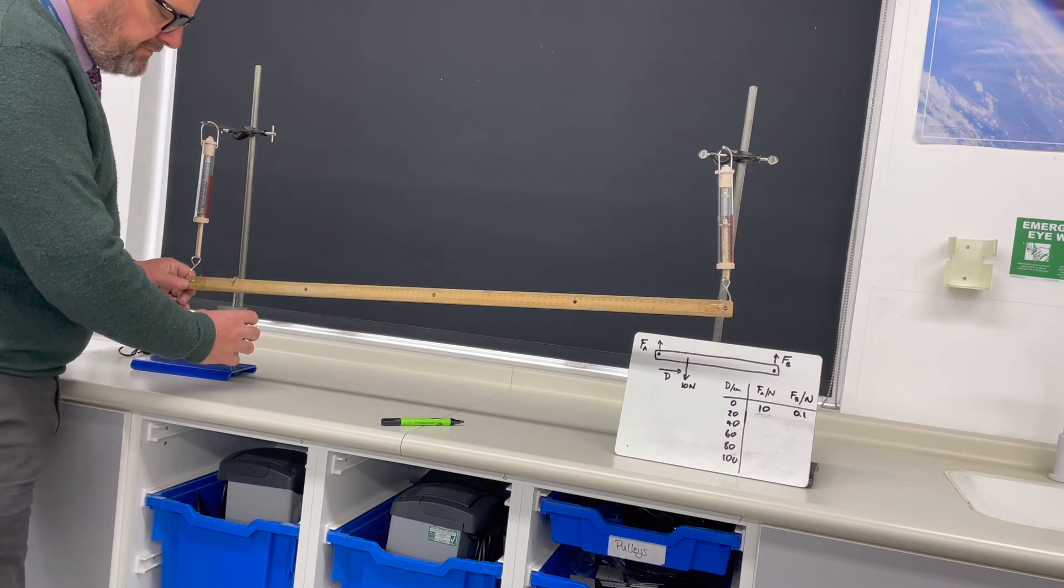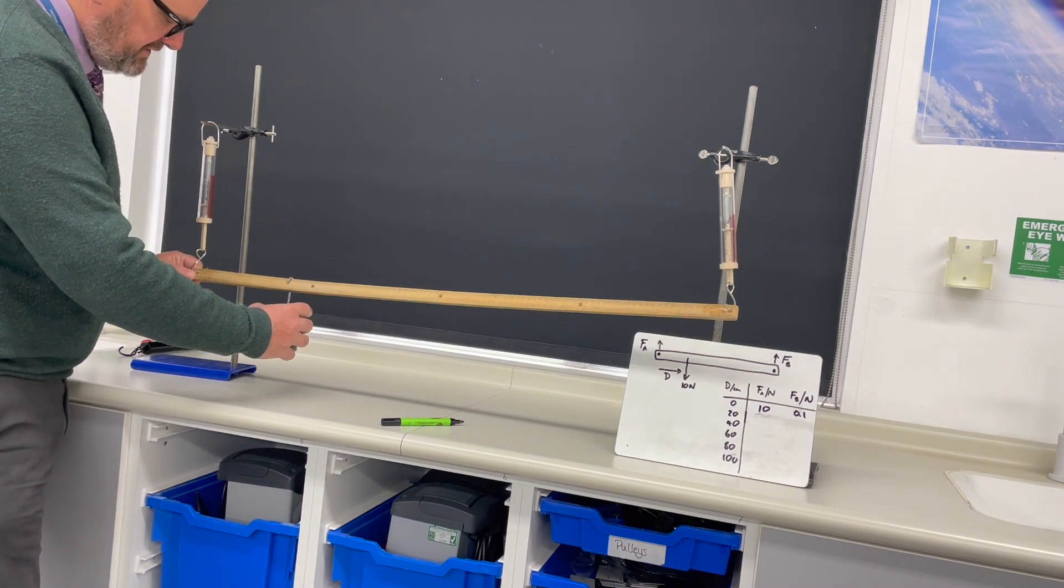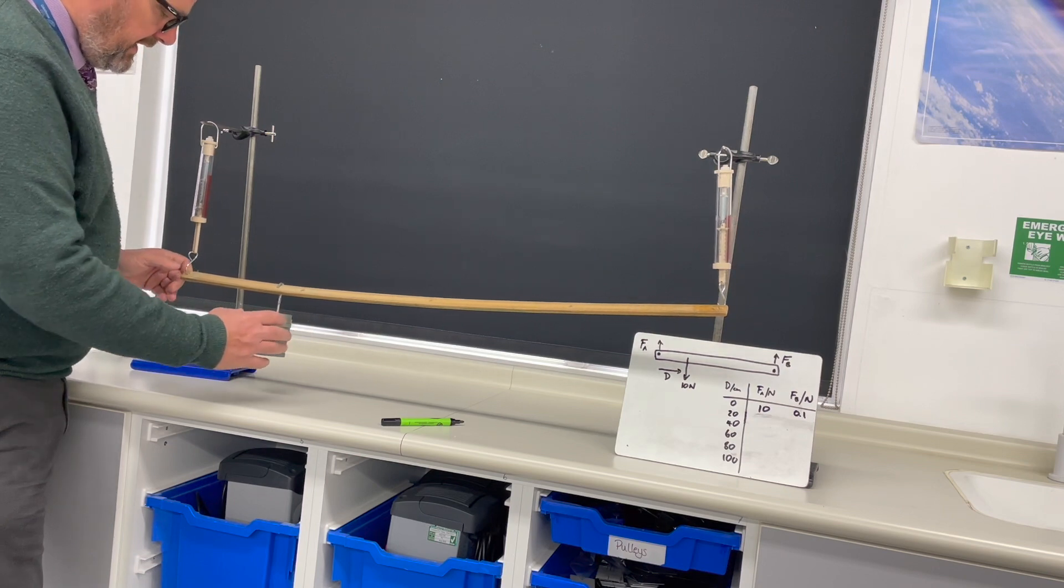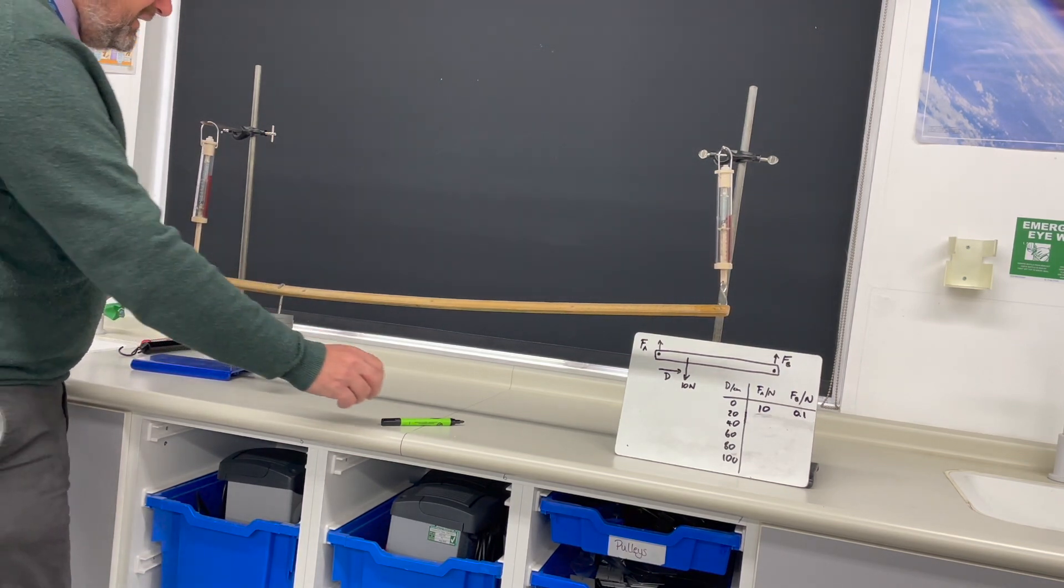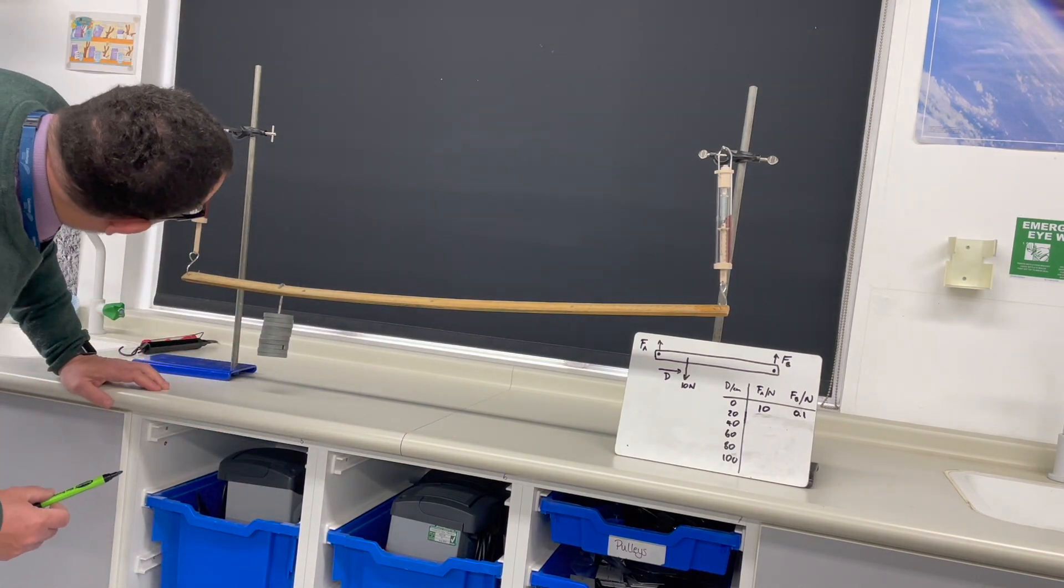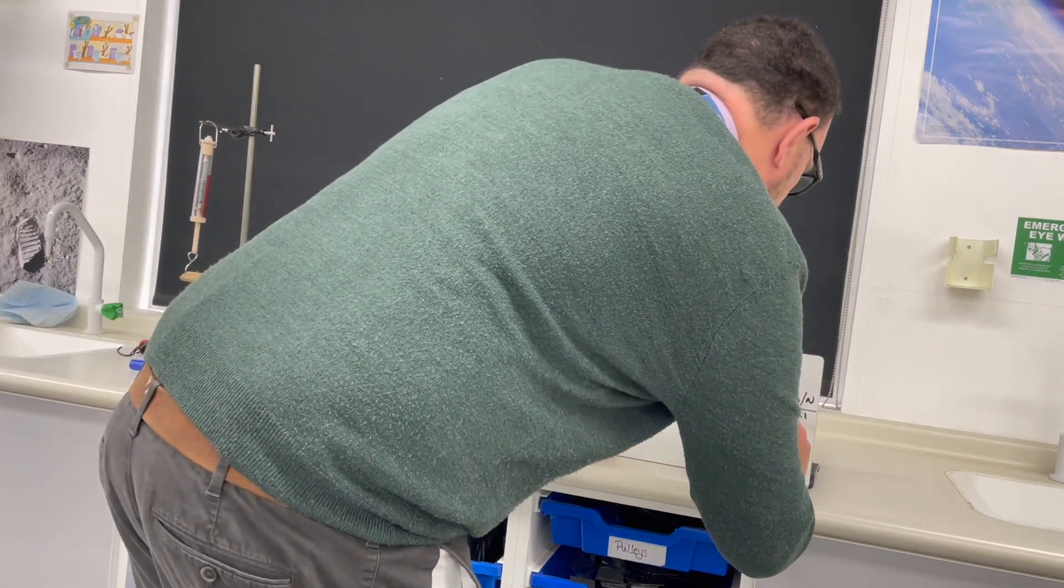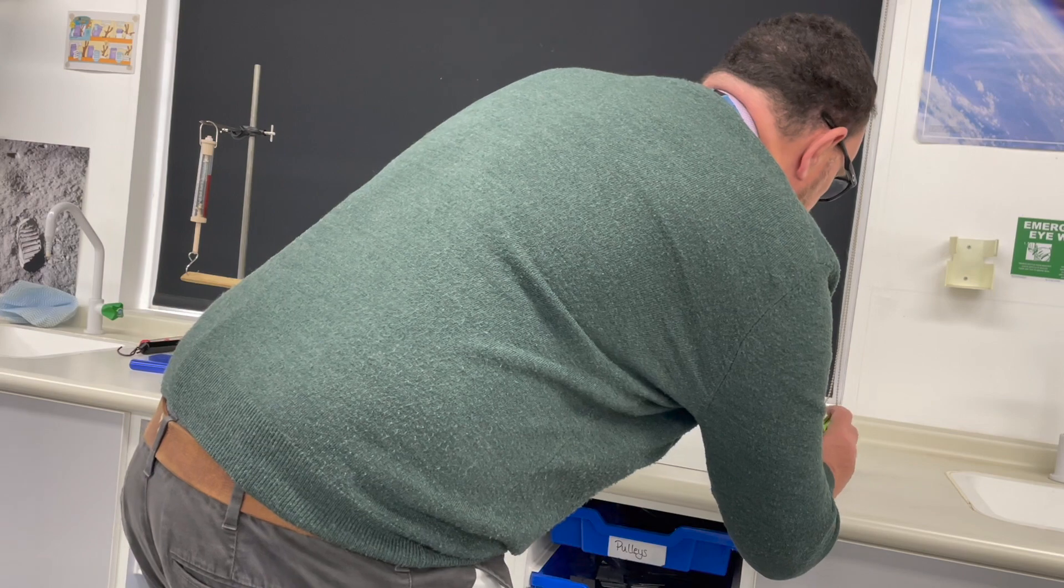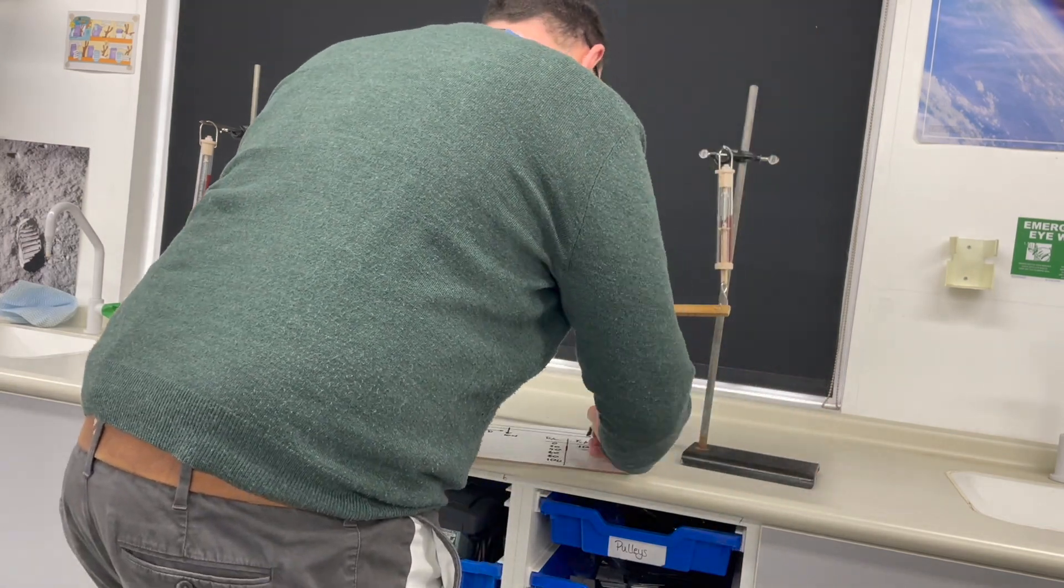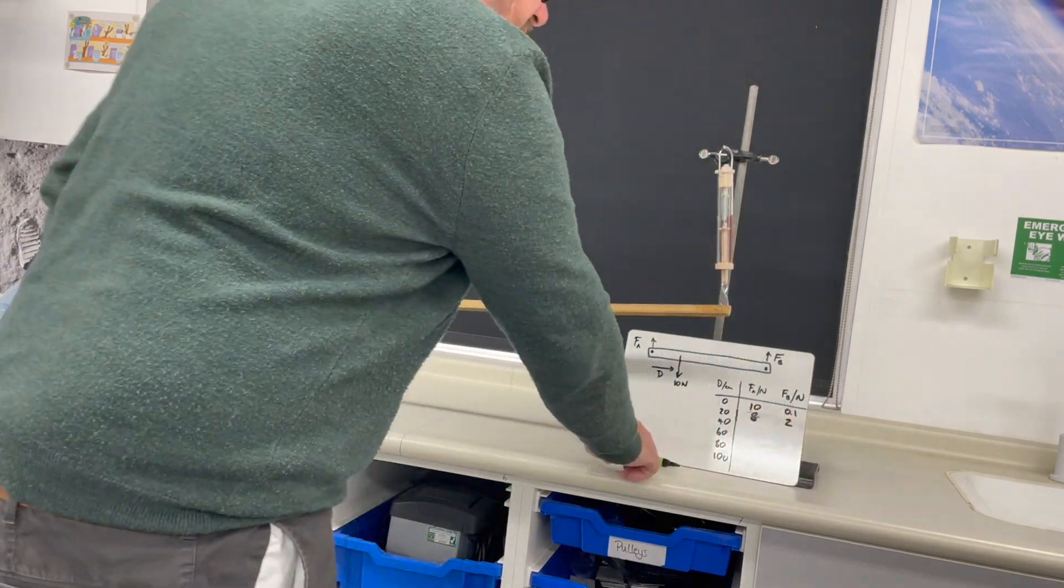I'm now going to move the load, simulating a lorry moving across the bridge, and it's now 20 centimeters away from force A. So it's now hanging here. I have a force on this end of about eight newtons, so FA is now eight newtons, and the force at this end is about two newtons.